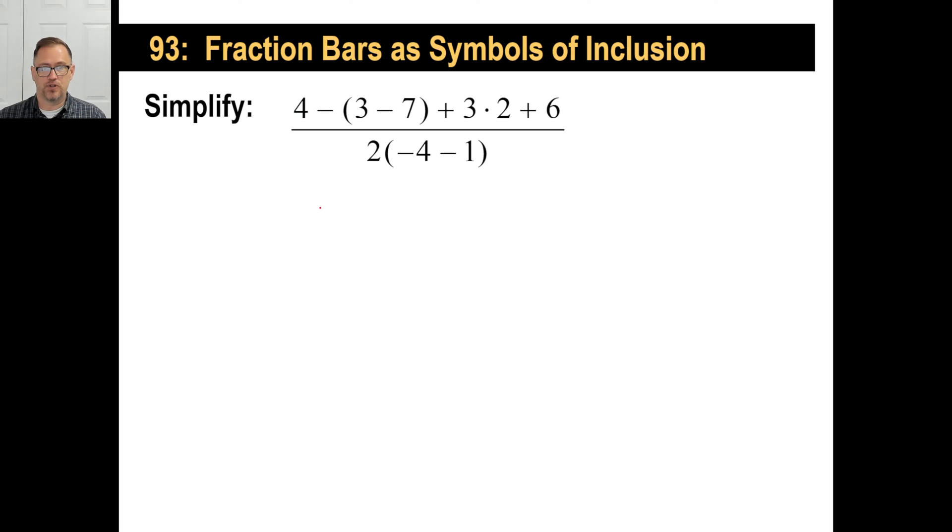So let's go. So we will do four minus, I'm going to go ahead and do the parentheses first. Three minus seven is negative four. Plus, let's do the three times two first. That'll be six plus six. Okay.